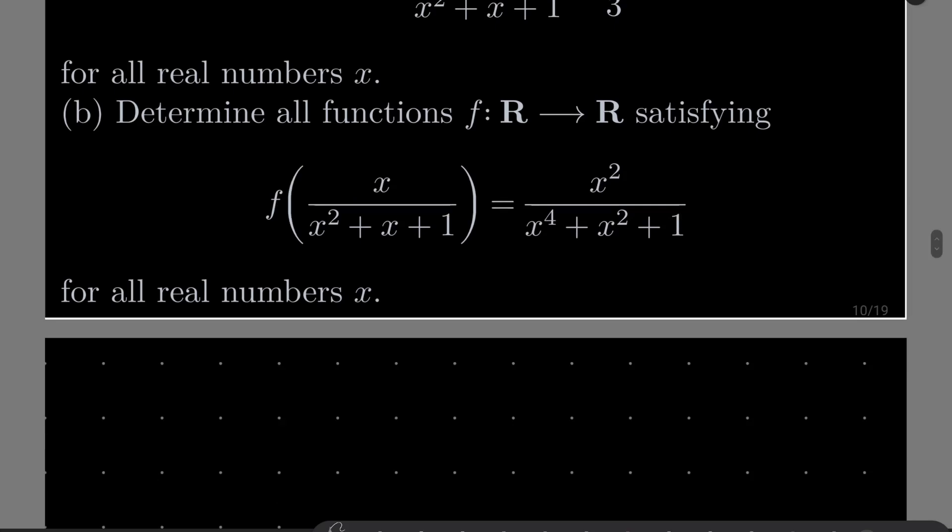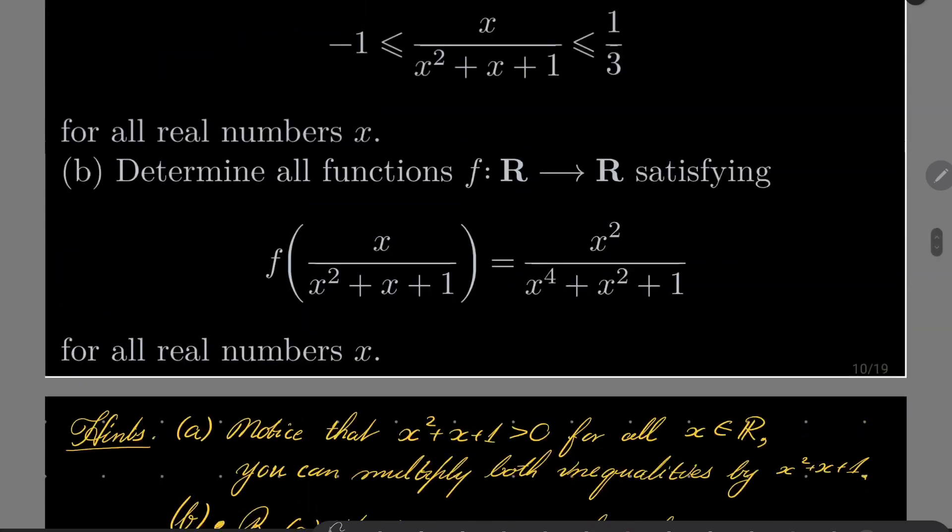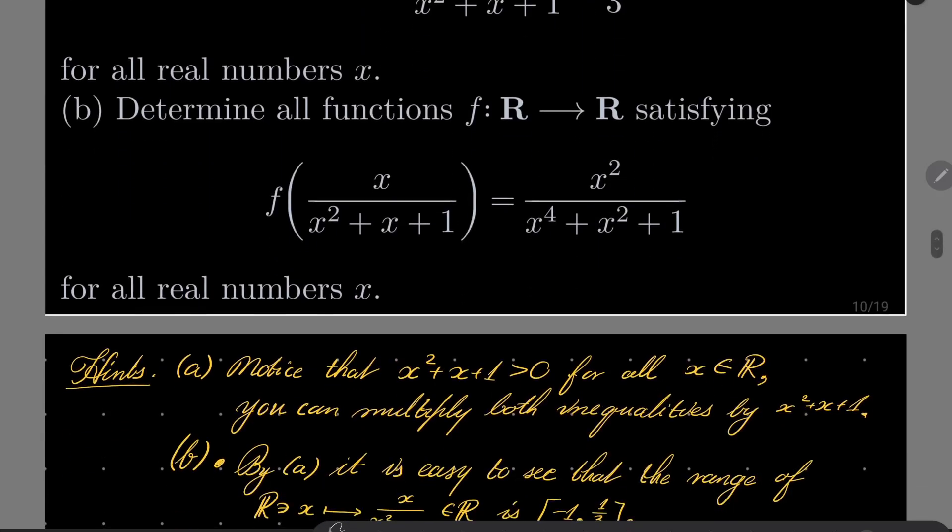This is a pretty standard problem, here are my hints. First, notice that x squared plus x plus 1 is always positive, so you can take our inequality and multiply both sides by this denominator, and just solve two quadratic inequalities.